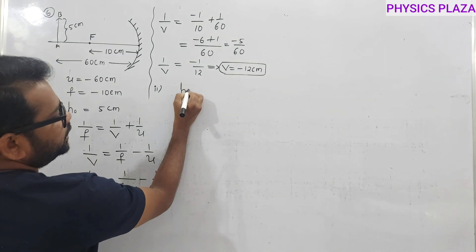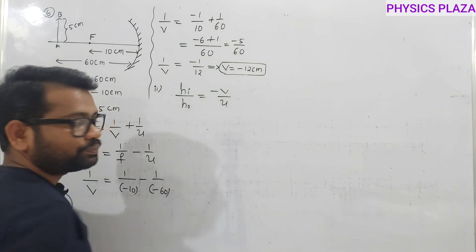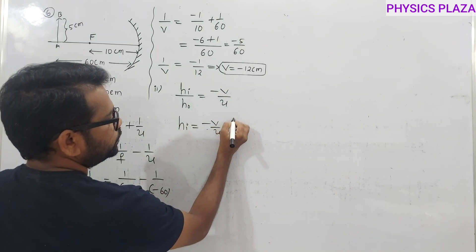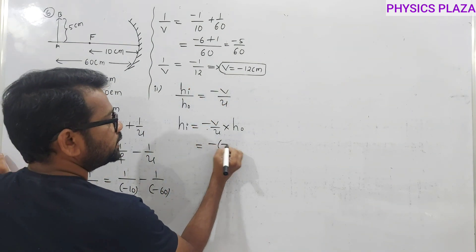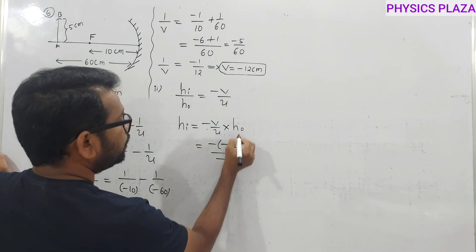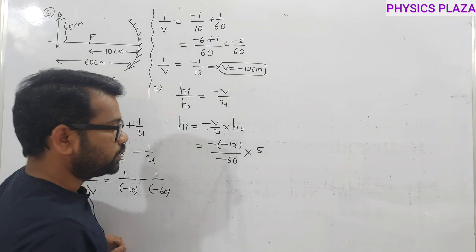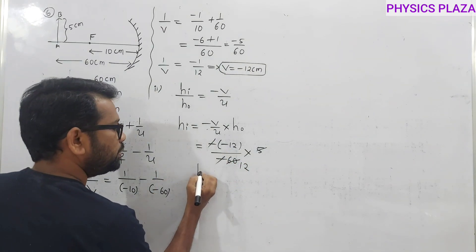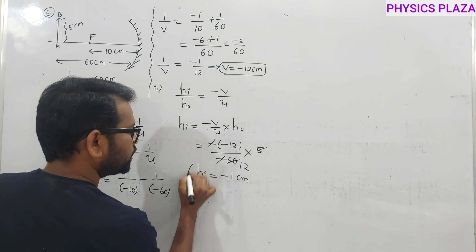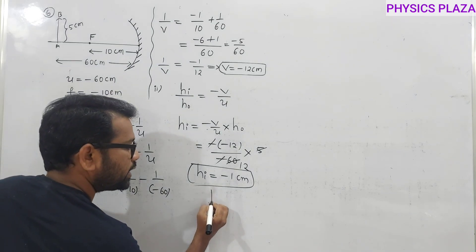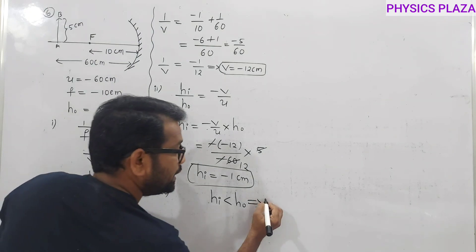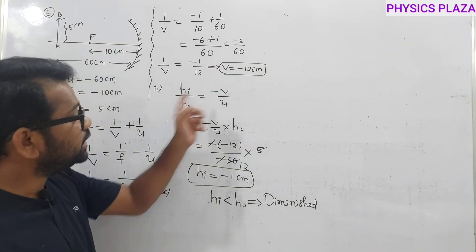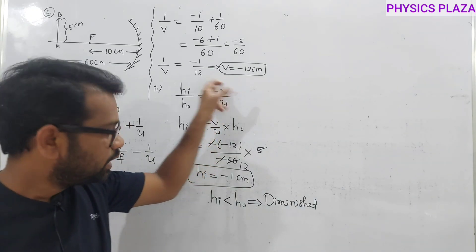Now calculate image height: image height = −(v/u) × h₀ = −(−12/−60) × 5 = −(12/60) × 5 = −1 cm. Image height is 1 cm in magnitude versus object height of 5 cm, so it is a diminished image. The image distance is negative, confirming it is a real image. So the image is real, inverted, and diminished.